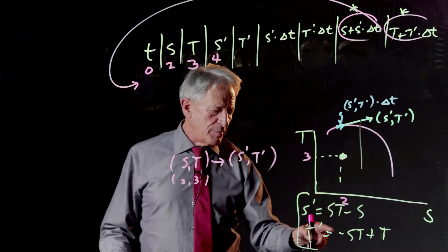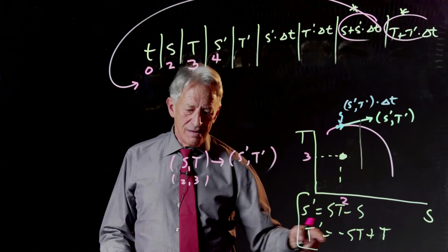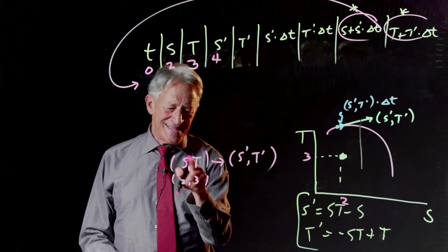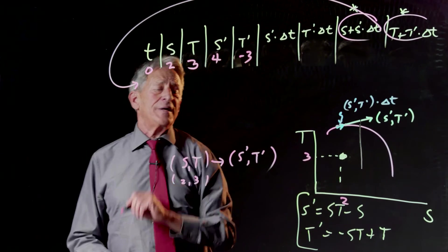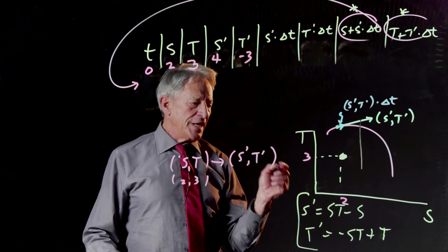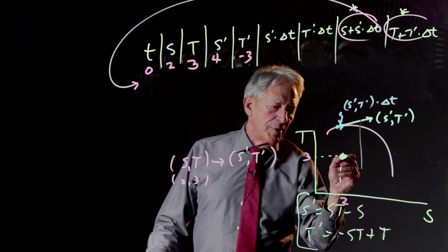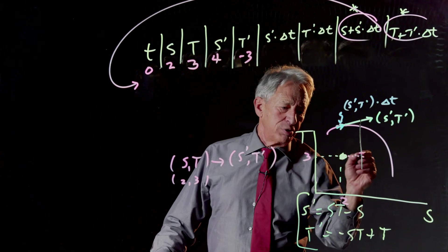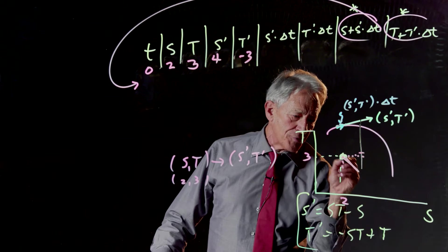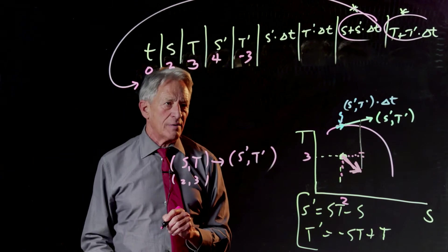t prime is equal to minus s t plus t, that's minus 6 plus 3 is minus 3. So our change vector at that point, we already see is the change vector in the direction plus 4 minus 3, there is our change vector right there.